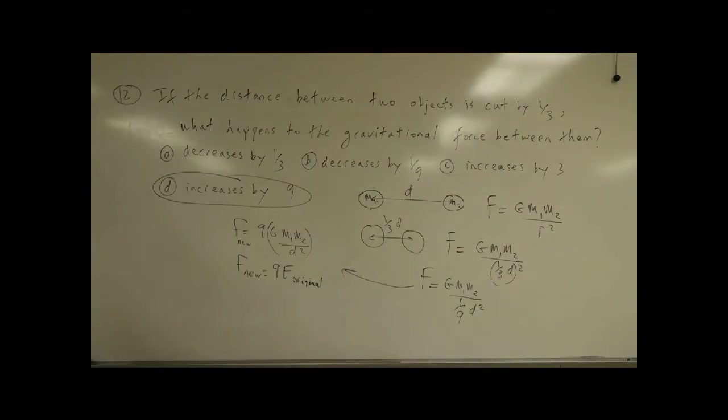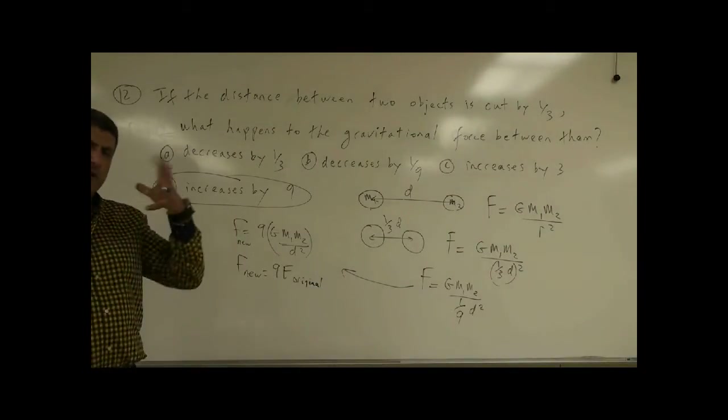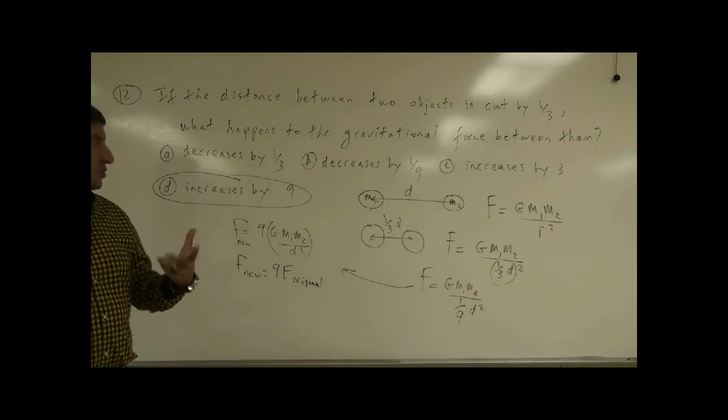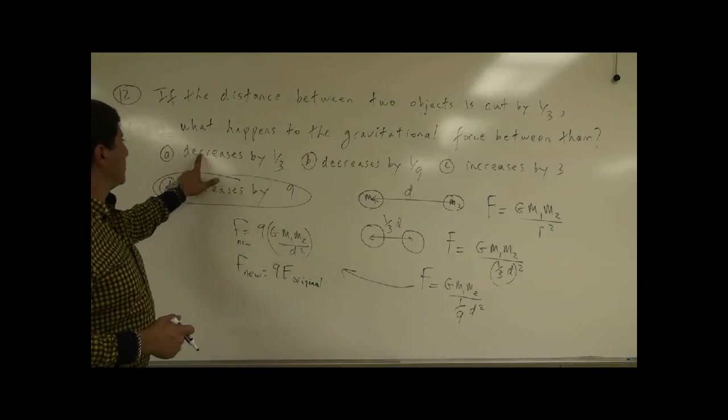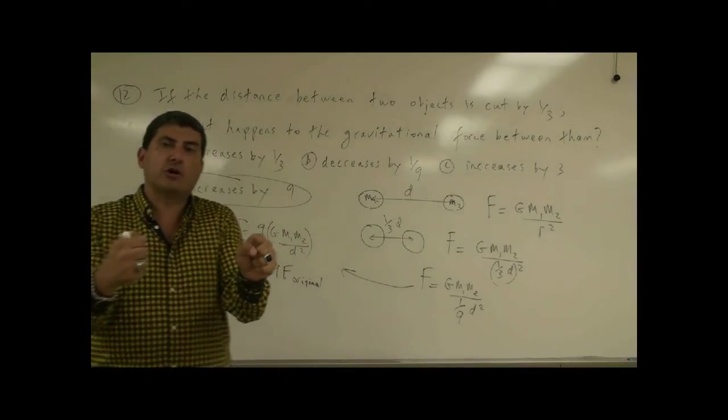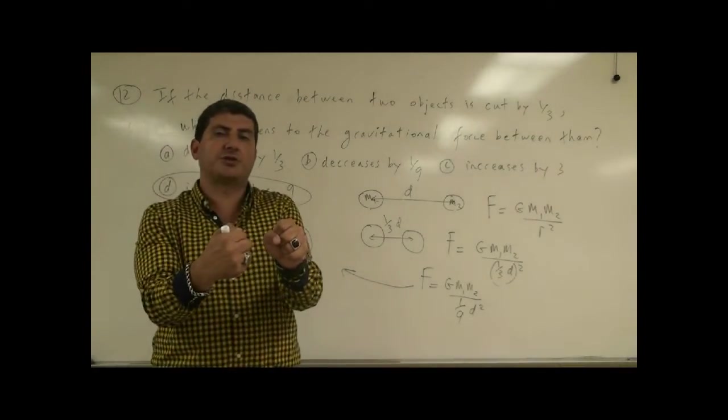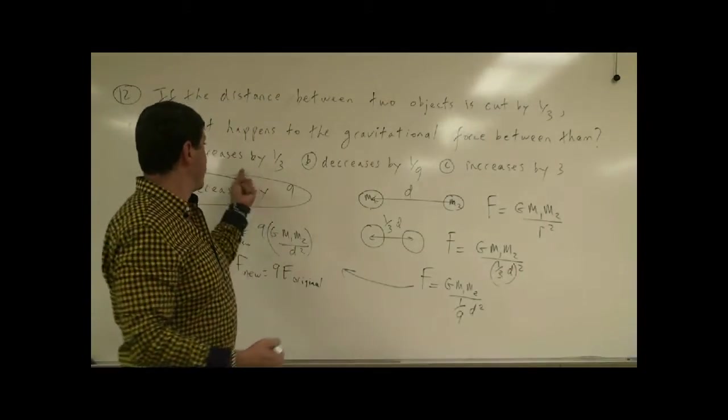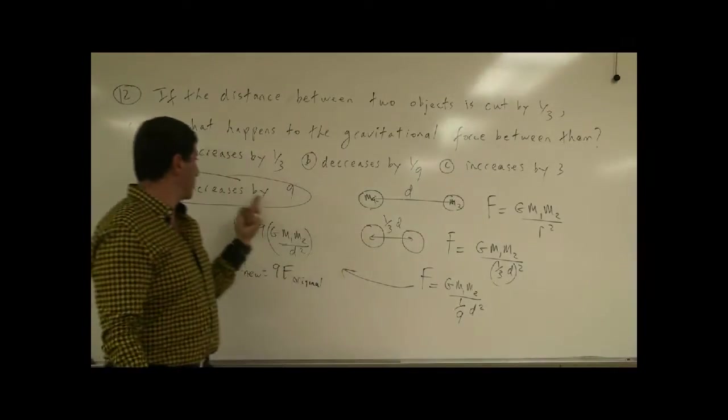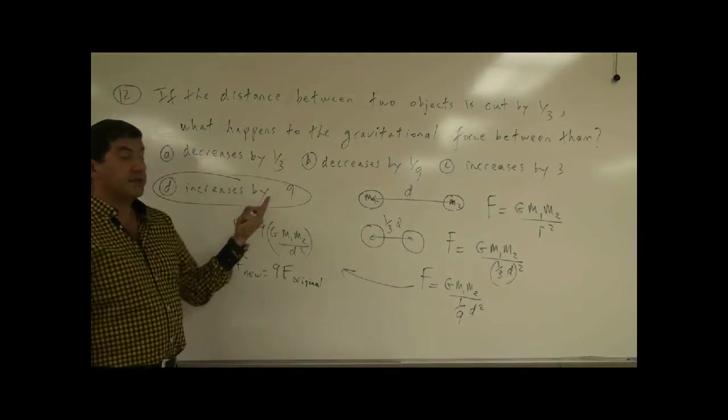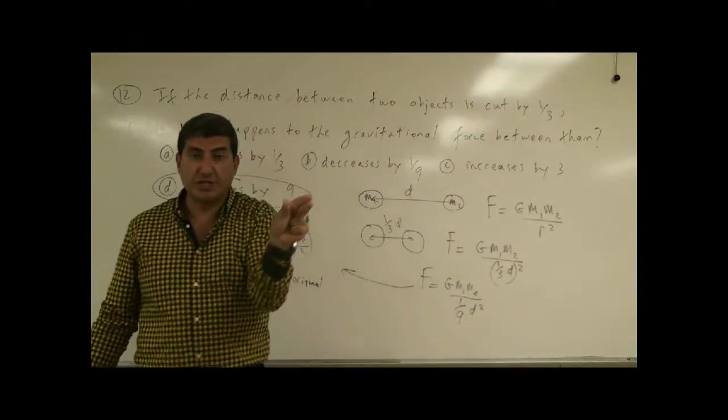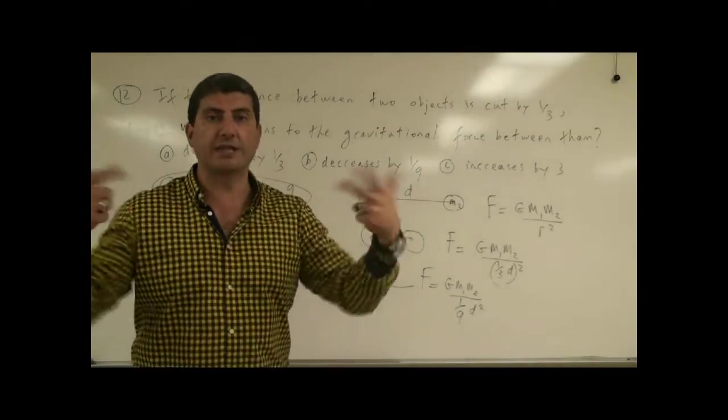The force increases by nine. So kind of logically, you can also make some eliminations here. You can kind of eliminate decreases by one-third, decreases by one-ninth, because you can say, if two objects come closer to each other, they should exert more force on each other, so the force cannot decrease. It's got to either increase by three or increase by nine. Then the next thing you have to do is apply the square law, so if you're decreasing it by one-third, you square it, you get nine.